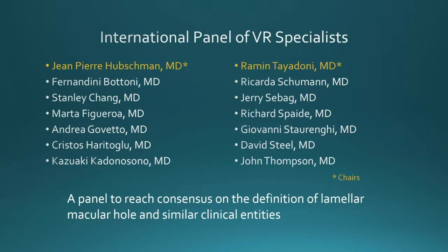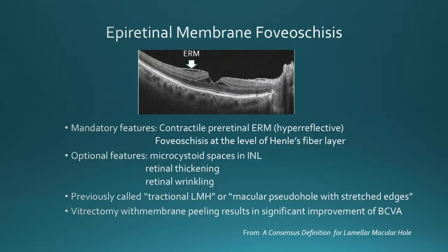These haven't been published yet, but are currently in review, and you should expect to see them in the next few months. I'd like to show definitions of two different conditions. The epiretinal membrane foveoschisis is the new term, which was previously called the tractional lamellar macular hole, or in some cases, macular pseudohull with stretched edges.